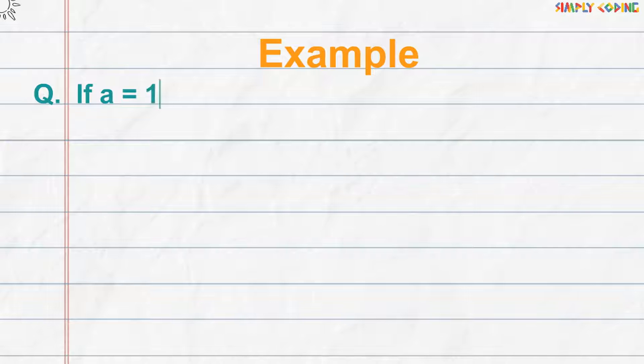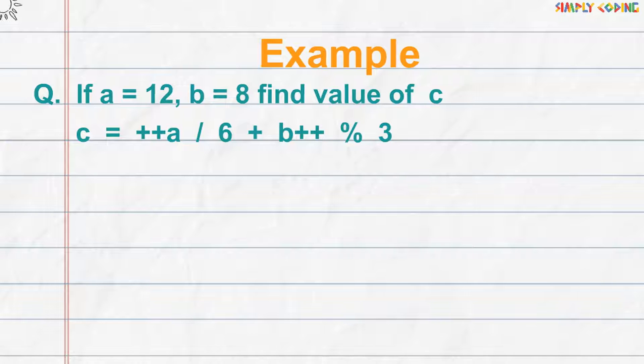Let's take another example. Whenever there are unary operators, you need to be extra careful and at each step also record what is the value of operands after a particular operation.